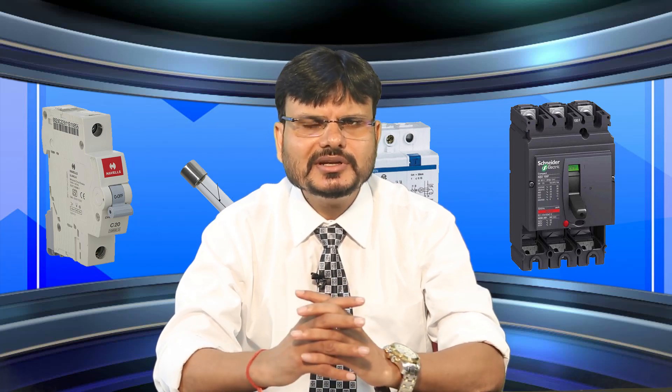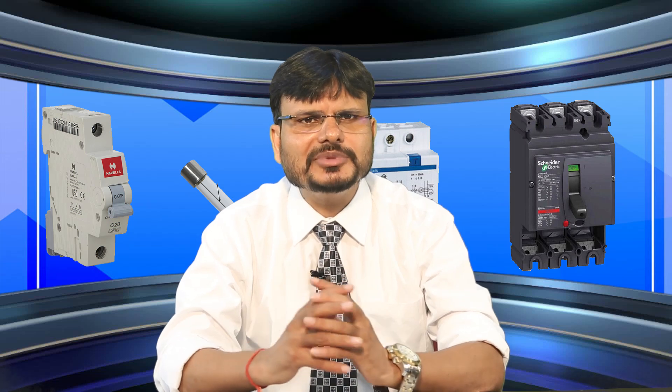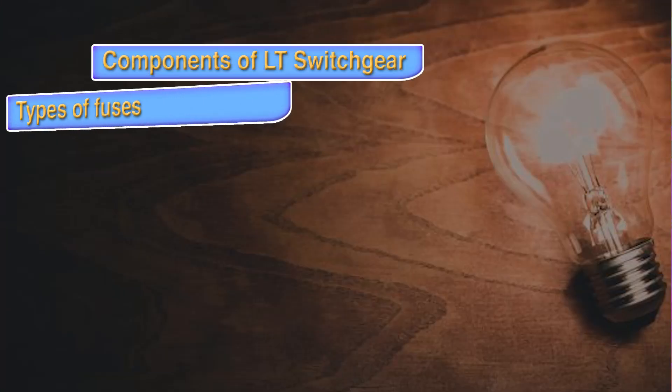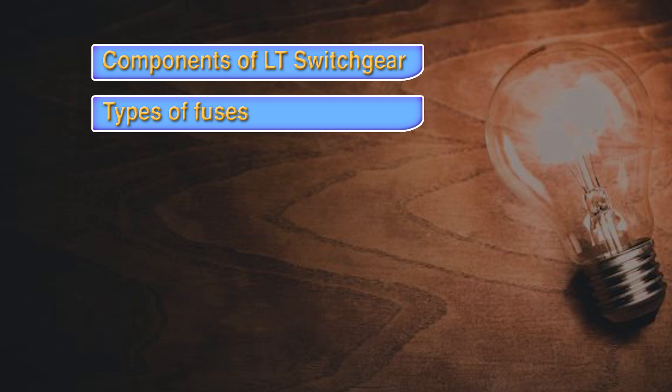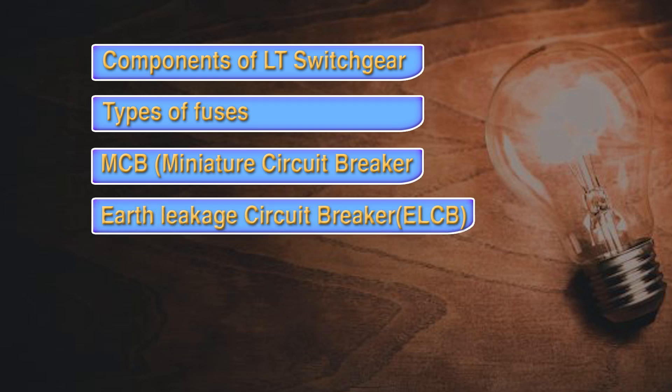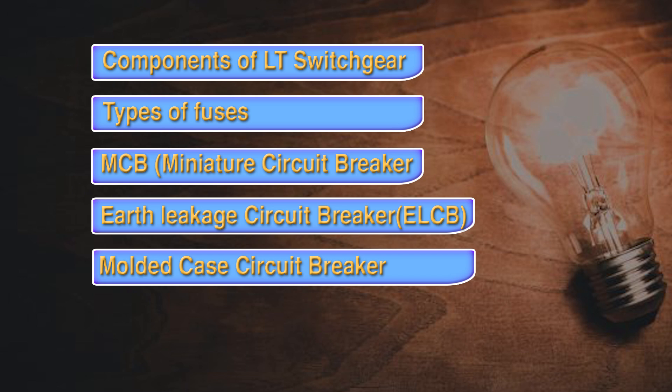In the previous session we discussed types of wire and cable, the difference between wire and cable, and the construction and classification of cable in detail. In this particular session we will discuss components of LT switchgear, different types of fuses, MCB (miniature circuit breaker), ELCB (earth leakage circuit breaker), and MCCB (molded case circuit breaker).